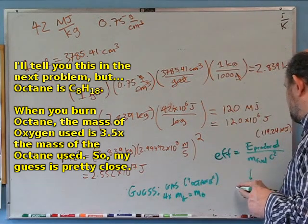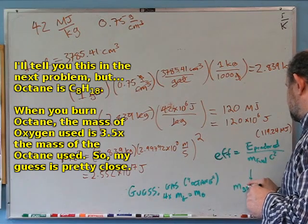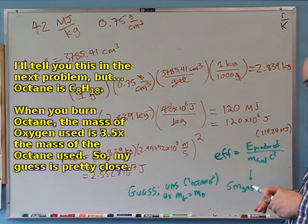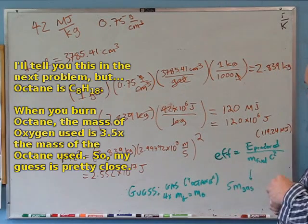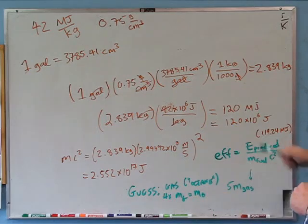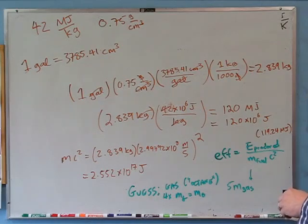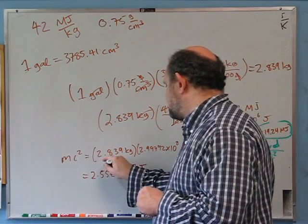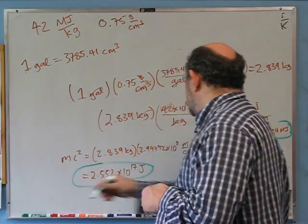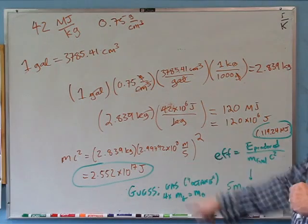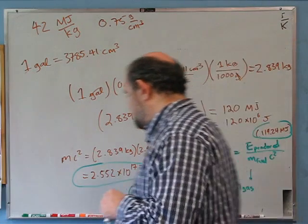So for my mass of the fuel, I'll use the mass of the gas times five — assuming I burn four times that mass in oxygen to burn the gas. The mass of the fuel includes the gas plus the oxygen. The energy produced is 119.24×10⁶ J, and the mc² is pre-calculated. I'll multiply that mc² by five to include the mass of the oxygen.